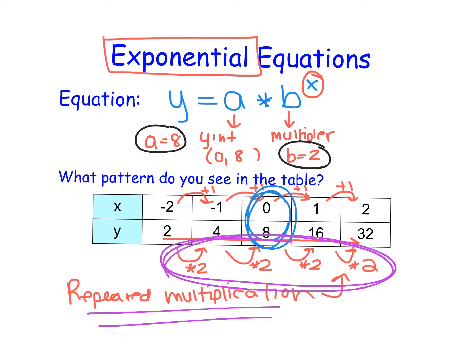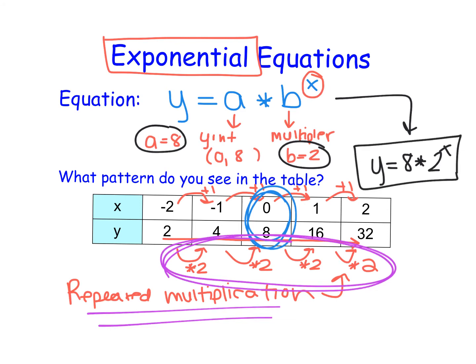So now I can use my a value and my b value to write an equation to model this table: y is equal to 8 times 2 to the power of x.